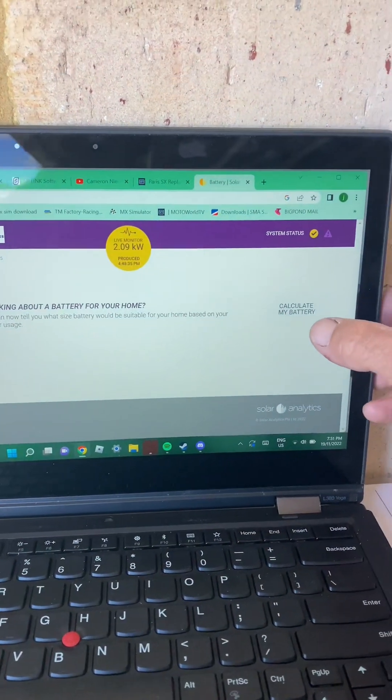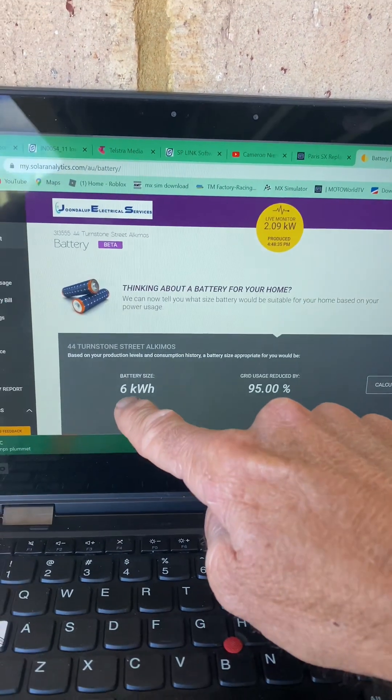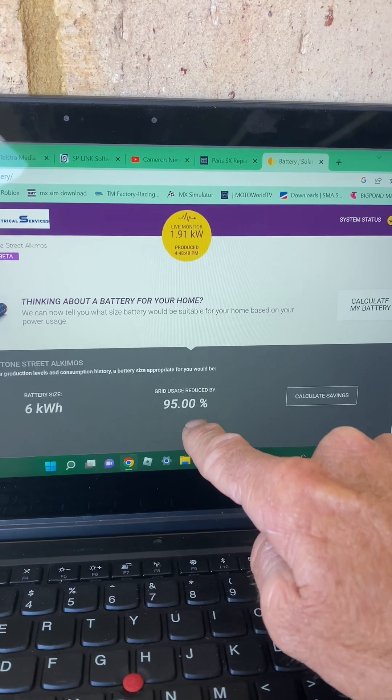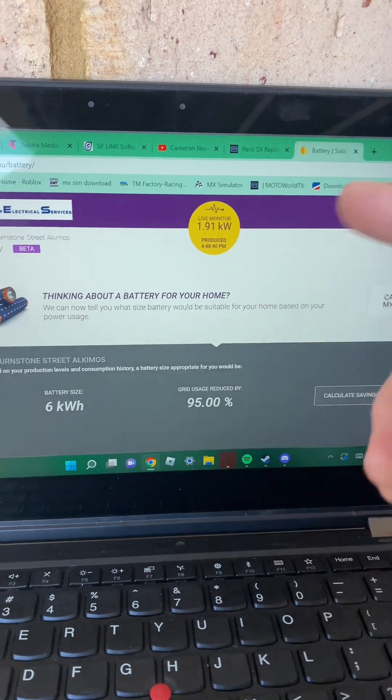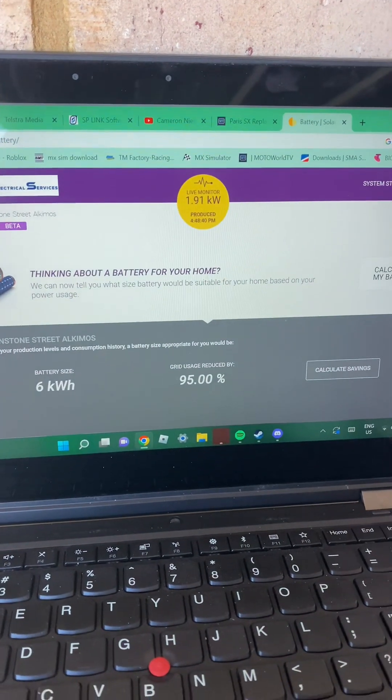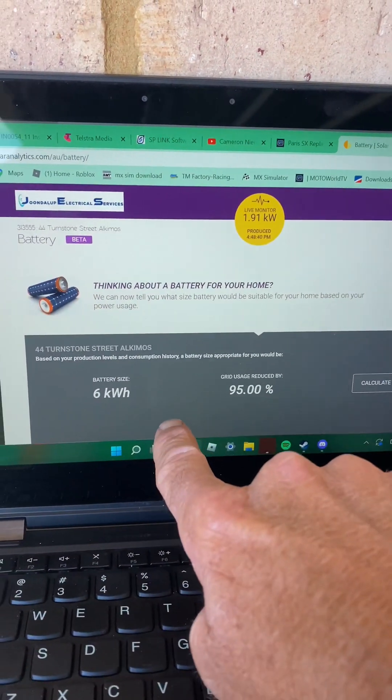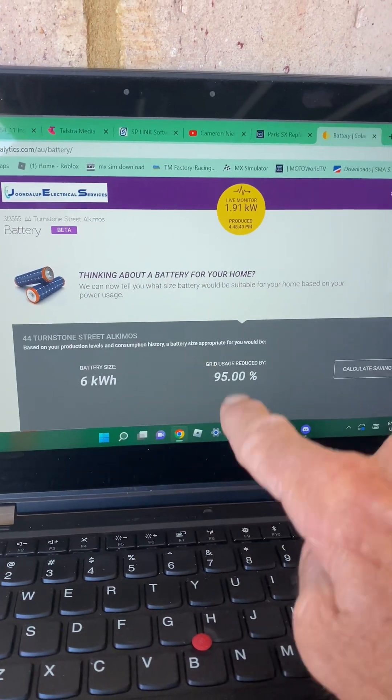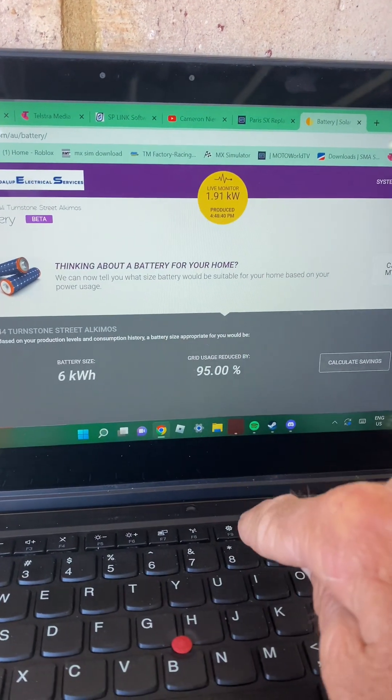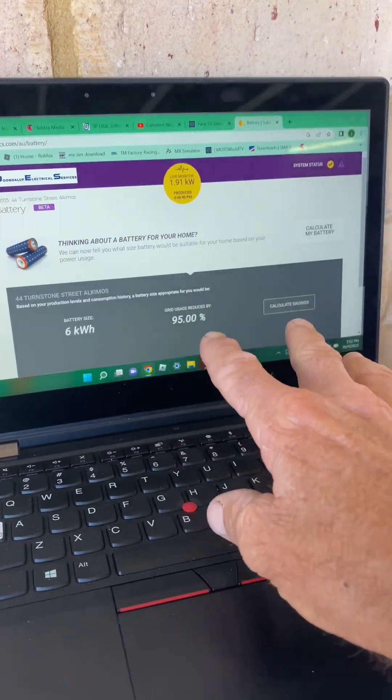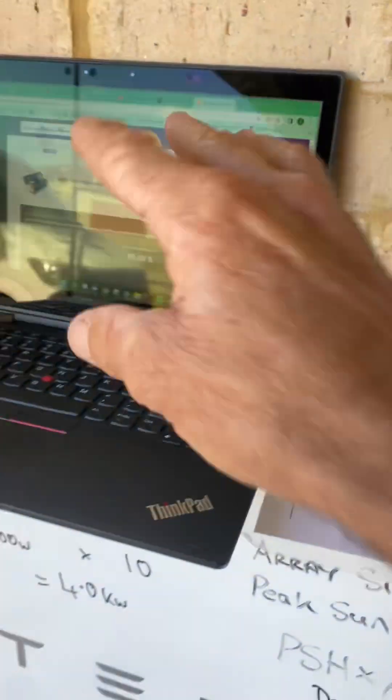Let's have a quick look. Calculate my battery. So for this house, a 6kWh battery would reduce their grid usage by 95%. Cool. We don't have to make assumptions, we don't have to do calculations or hypotheticals. It's telling us. And it's telling us based on our solar production and our consumption. And when I say consumption, I mean when you're using power, that's specific to your household. There's no assumptions made.